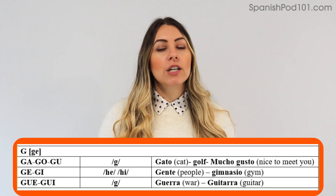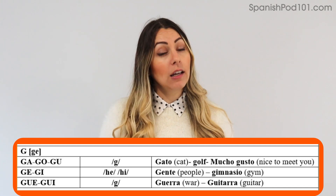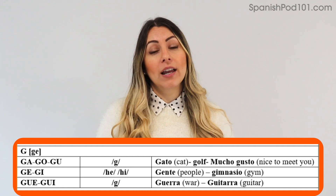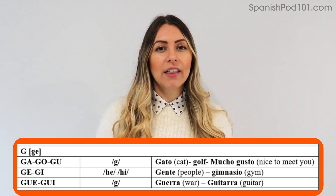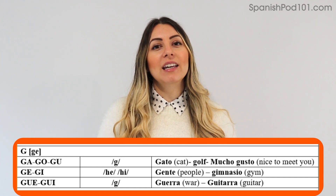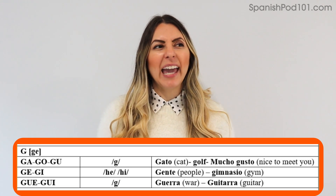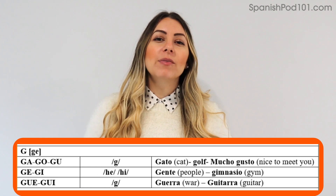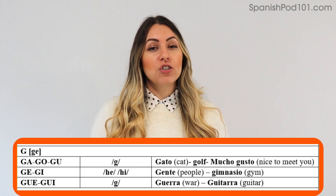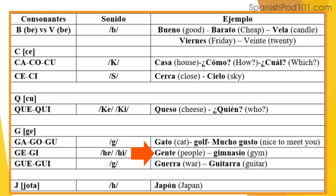But if we have G-E or G-I, then it's going to be like a soft H sound. In Spain and certain parts of Latin America the H is a lot stronger. So G-E and G-I would be like a strong H — really strong in Spain. For example: gente, gimnasio.